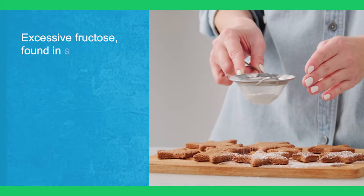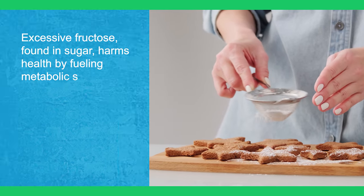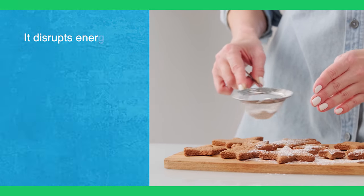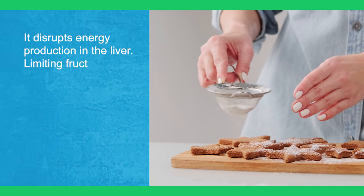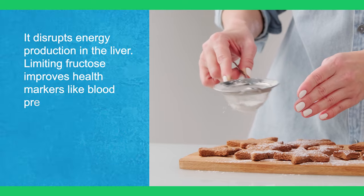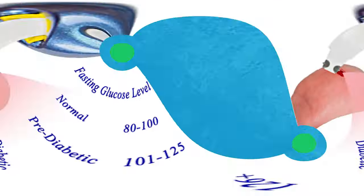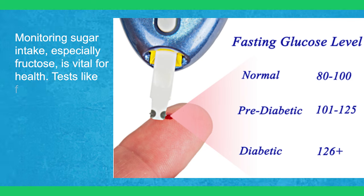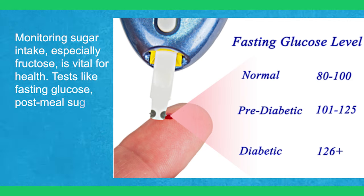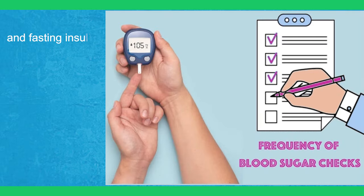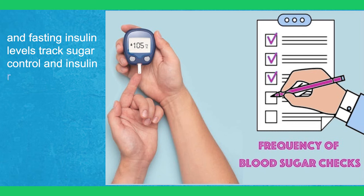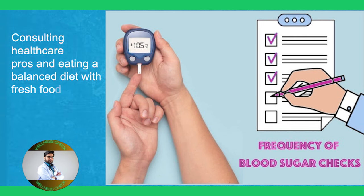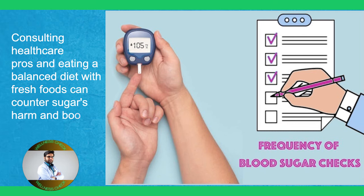Excessive fructose found in sugar harms health by fueling metabolic syndrome, fatty liver disease, high blood pressure, and insulin resistance. It disrupts energy production in the liver. Limiting fructose improves health markers like blood pressure and insulin sensitivity. Monitoring sugar intake, especially fructose, is vital for health. Tests like fasting glucose, post-meal sugar, HbA1c, and fasting insulin levels track sugar control and insulin resistance. Consulting healthcare professionals and eating a balanced diet with fresh foods can counter sugar's harm and boost well-being.